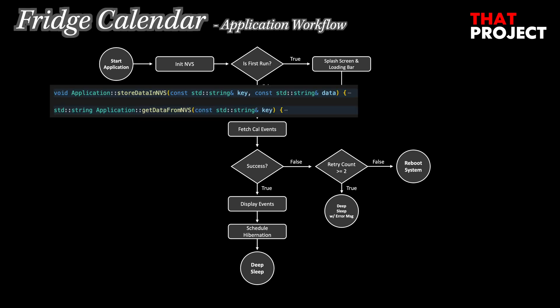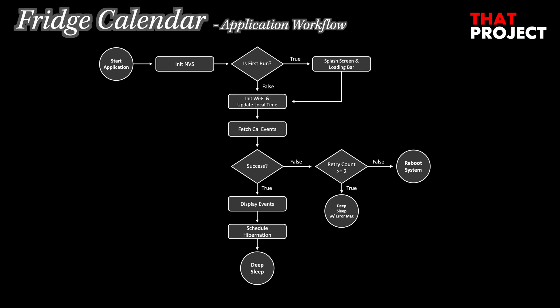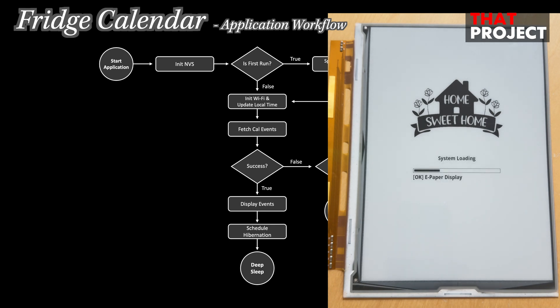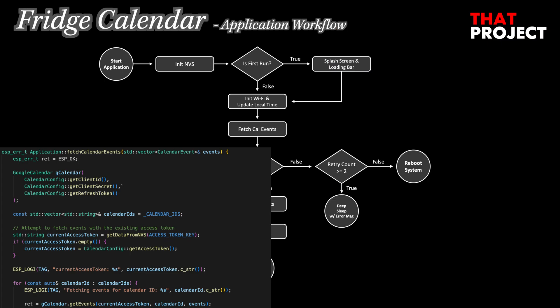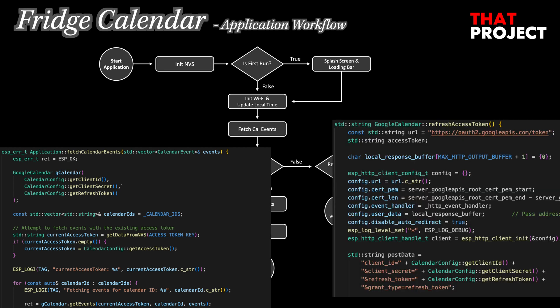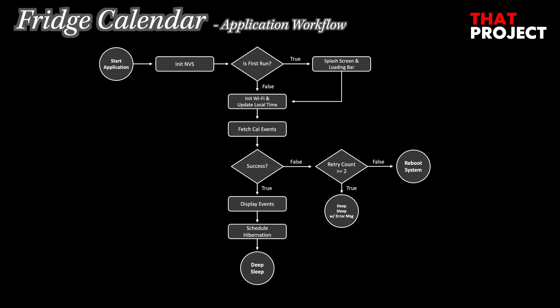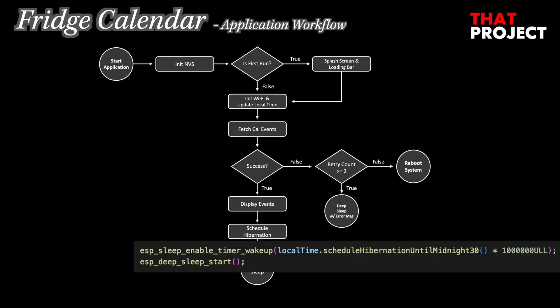This is the workflow for my application. I get some data via NVS, which is perfect for storing an updated access token as it is not erased by reflashing like EEPROM. If this is the first time it is running, it will show a loading screen where you can check the current status at each stage. After connecting to Wi-Fi, you get the current local time. Then you request the desired data using HTTP POST through the Google API — first using the access token, and if expired, using the refresh token to get a new access token. You can update the screen with the event information, then hibernate the system until 03:00 the next day.